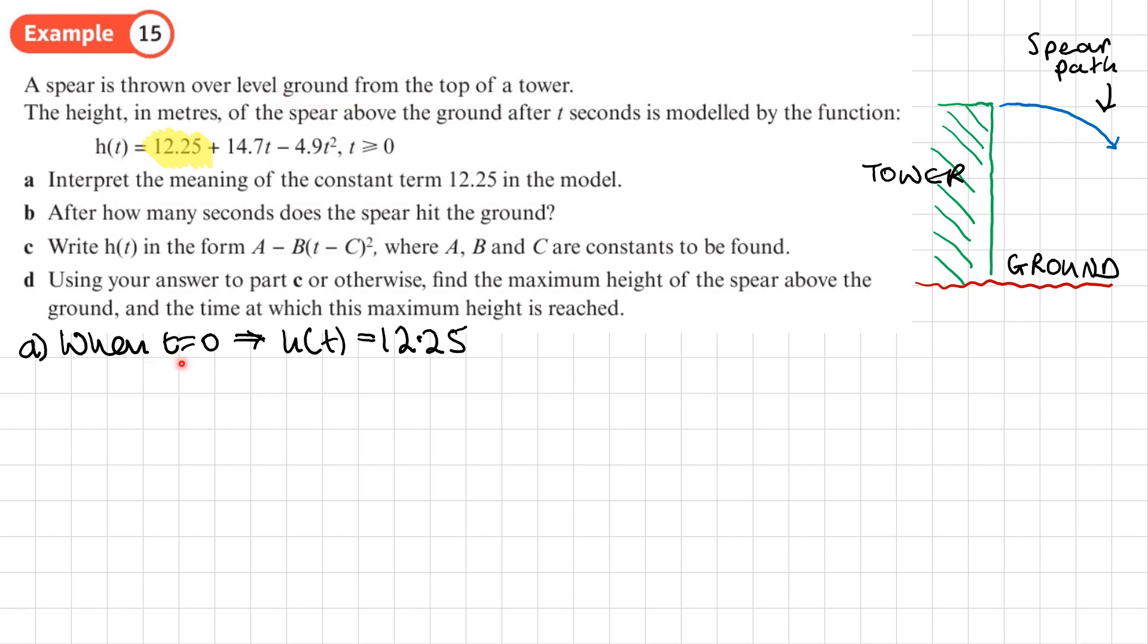12.25 is going to be h(t), the height, that's 12.25 meters. So basically we can say this is going to be our interpretation: the spear is thrown from a height of 12.25 meters. There we go, there's our full interpretation. That's how we want to answer it. Why they're throwing the spear from the top of a tower, who knows, nobody knows, very strange behavior as I said, but that's the height they're throwing it from.